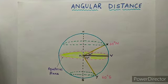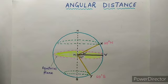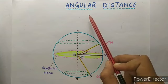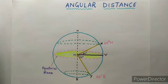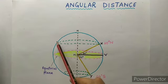Latitudes and longitudes are imaginary lines drawn on the globe. Today we are going to start with a new topic: angular distance. In angular distance you will learn how latitudes and longitudes are expressed in degrees as well as direction. For that you need to take a compass and draw a circle.